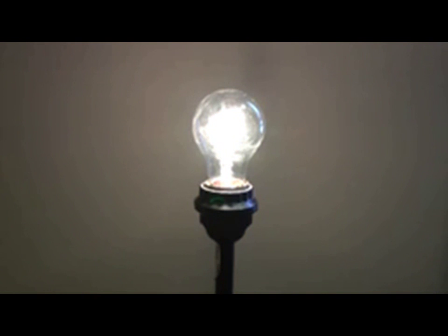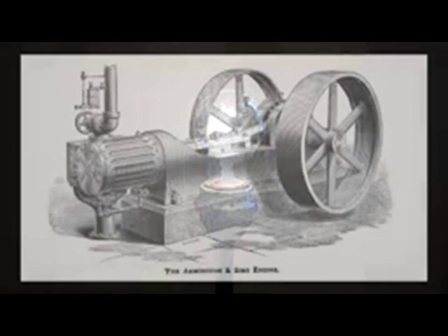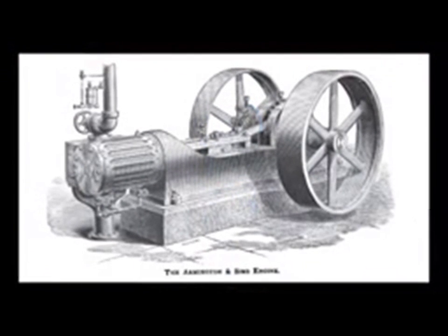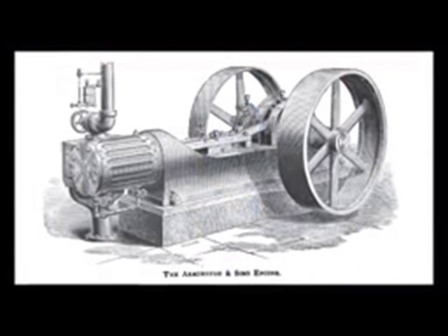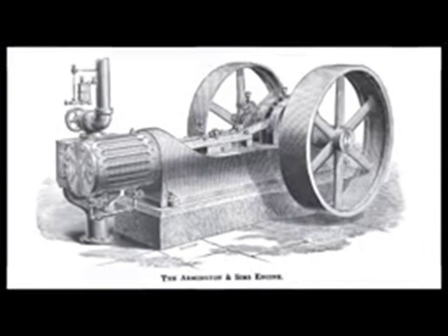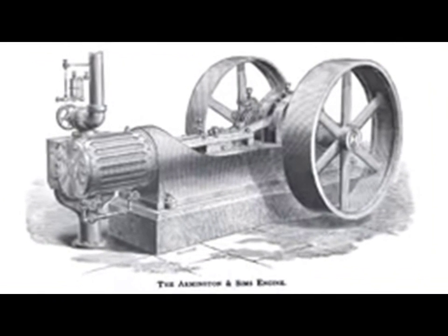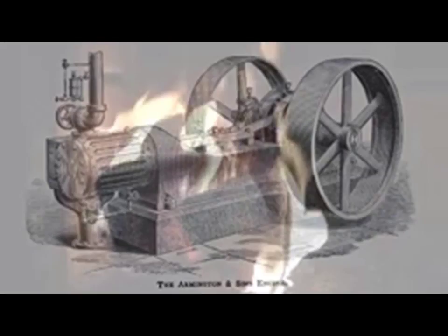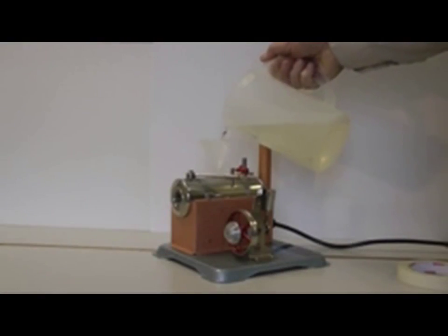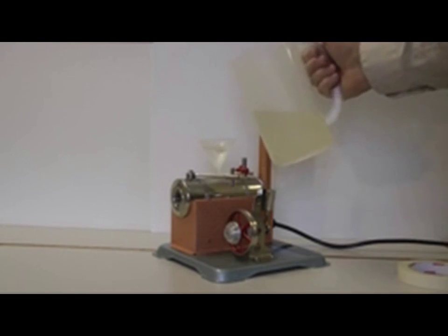In the case of the light bulb, Edison created a complete power system generating electricity and delivering it to customers. Edison's system typically used a steam engine to drive a generator, creating direct current electricity. This is an Armington and Sim steam engine — Edison purchased hundreds of these to run as generators. Steam engines like this were fueled with coal, wood, or oil.